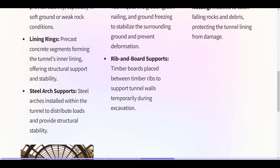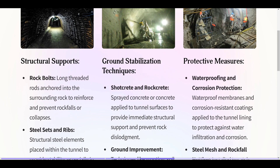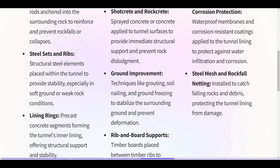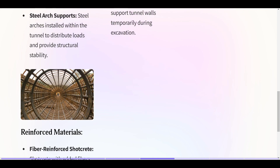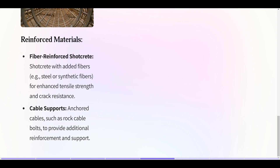Rib and board supports use timber boards placed between timber ribs to support tunnel walls temporarily during excavation. Protective measures include waterproof membranes and corrosion-resistant coatings to protect against water infiltration, and steel mesh and rock fall netting to catch falling rocks and debris. Reinforced materials include fiber reinforced shotcrete for enhanced tensile strength and crack resistance, and anchored cable supports such as rock cable bolts for additional reinforcement.